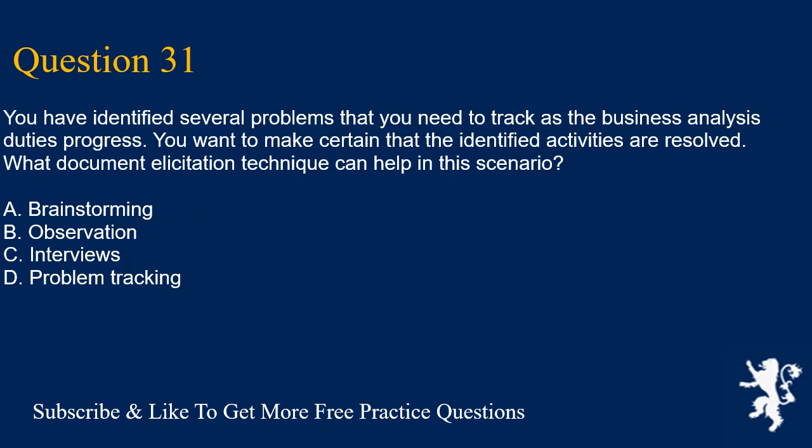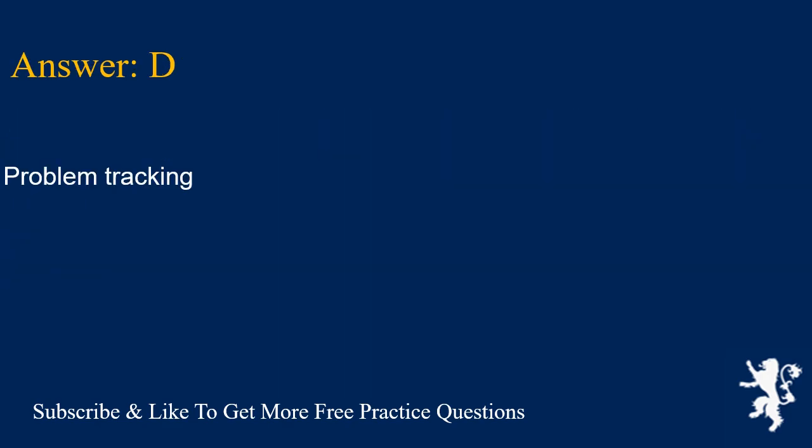Question 31: You have identified several problems that you need to track as the business analysis duties progress. You want to make certain that the identified activities are resolved. What document elicitation technique can help in this scenario? A. Brainstorming. B. Observation. C. Interviews. D. Problem tracking. Answer is D. Problem tracking.